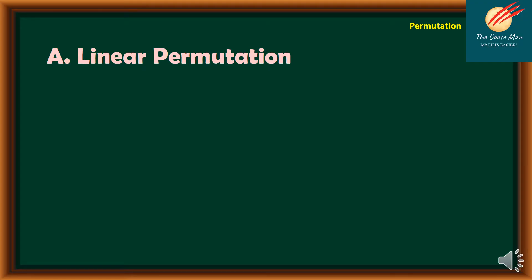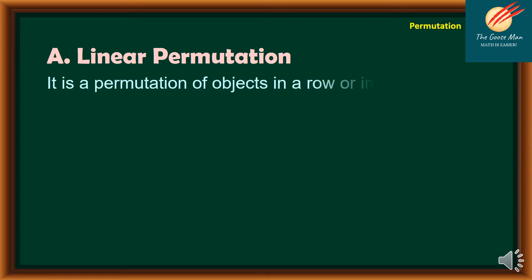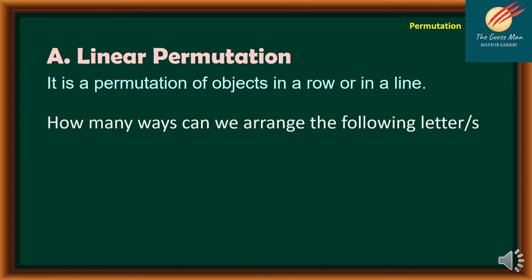So there are three types of permutation that we will discuss. The first is linear permutation. Whenever we talk about linear permutation, it is a permutation of objects in a row or a line. To give you an example, let's consider this word problem: how many ways can we arrange the following letters?